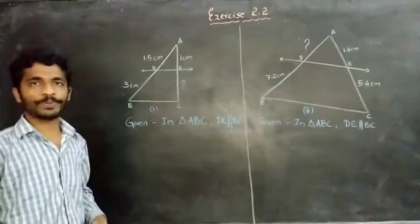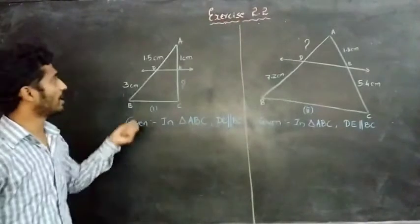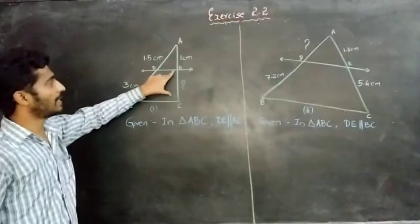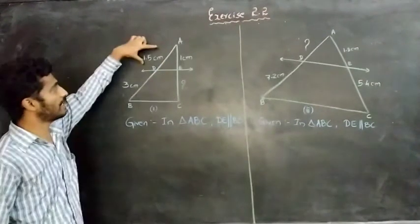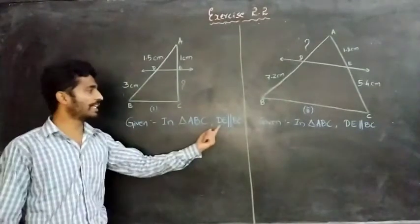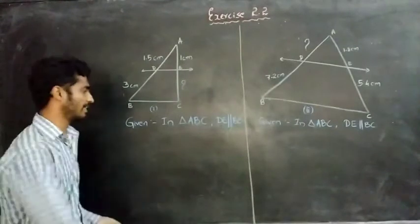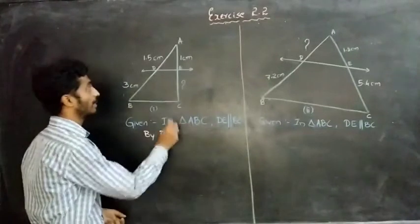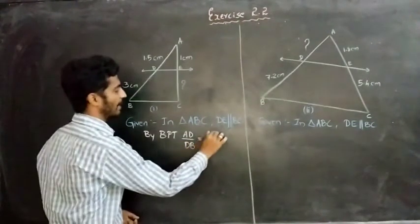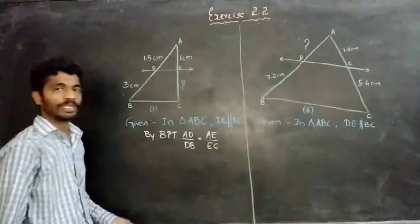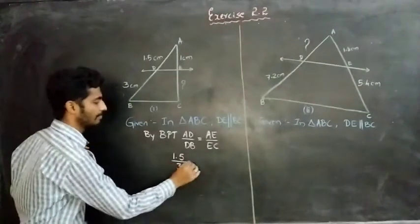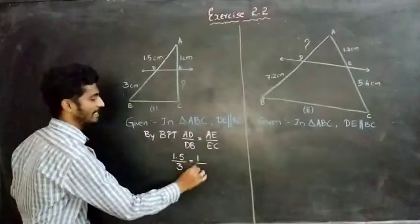Exercise 2.2. In the first question they give two diagrams. In the first diagram, DE is parallel to BC in triangle ABC. We have to find the measurement of EC, where AD is 1.5 cm, DB is 3 cm, AE is 1 cm. Already we know DE is parallel to BC. By applying the Basic Proportionality Theorem, we will get AD by DB equal to AE by EC.